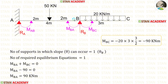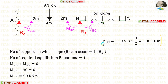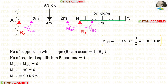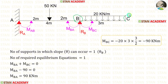We know that at joints, the summation of moments will be 0. At joint B, there are two moments, MBA and MBC, and when we add them, the result will be 0. Since BC is overhanging, we can easily calculate MBC. For that, we have to calculate the moment at point B from point C. In BC, there is a UDL of 20 kN per meter over a distance of 3 meters.